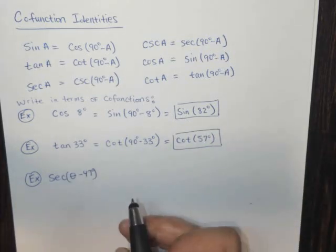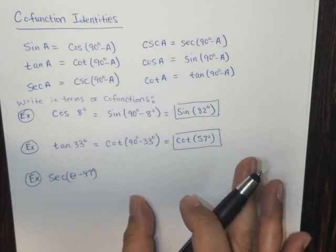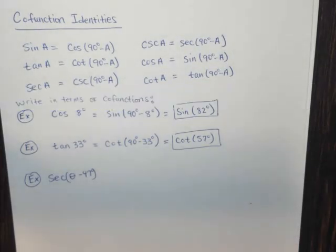Now let's look at one last example and then we're done with these cofunction identities. They're really simple. This one's a little bit more challenging.